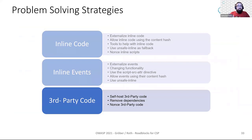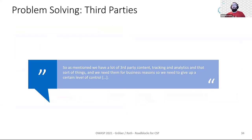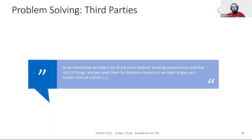Another big problem was the presence of third-party code. Participants either allowed the third party as a trusted source, self-hosted the loaded libraries, nonced the loaded scripts, or some even removed the dependency entirely. However, removing the dependency was only possible because our task used a small web application. As we've seen, it's sometimes not possible to resolve issues introduced by third parties. Therefore, in the worst case, you may need to give up a certain level of control or even allow execution of inline resources if your third party is not CSP compliant.